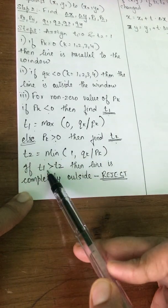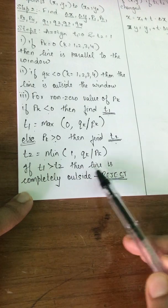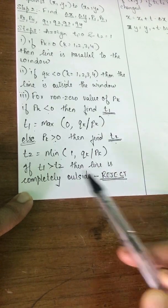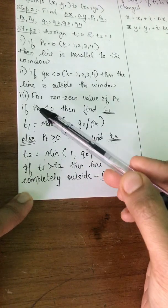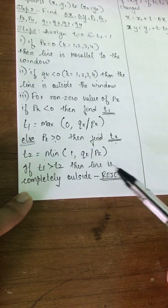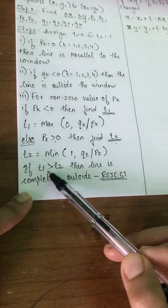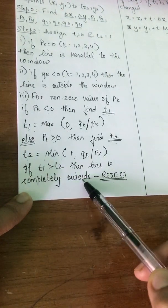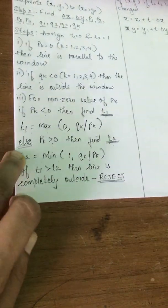Then what do you do? If t1 is greater than t2, then the line is completely outside and you reject the line. After finding t1 and t2, you decide whether the line is inside, outside, or partially inside. If t1 is greater than t2, then the line is completely outside and hence you reject it.